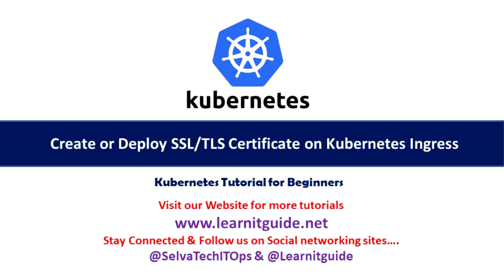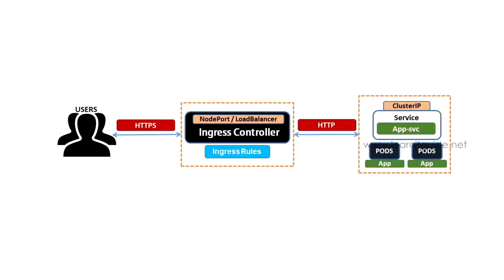By default, when you deploy an Ingress Controller, you can use your application on the HTTP port. Your users access the application through HTTP. You can create an SSL certificate or purchase one from a trusted provider, then deploy the SSL certificate in the Ingress Controller so that your application is accessible via HTTPS.